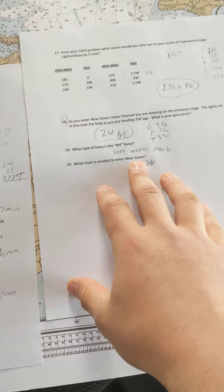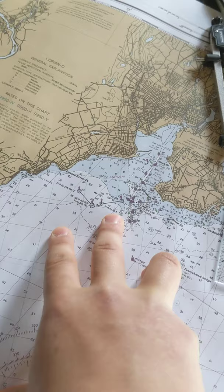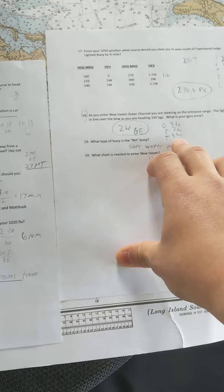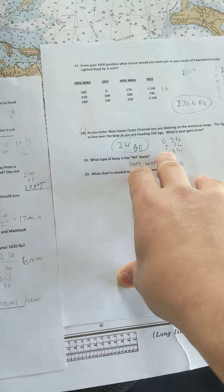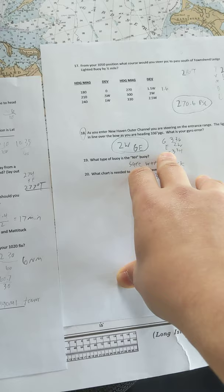For question number 15, to find the gyro error, I found the heading inside the channel to be 334 degrees true, and my per gyro compass heading would be 336. Taking those headings, I found since you would be adding east, the difference would be 2 degrees west, subtracting 2.